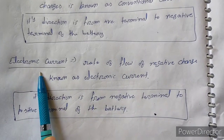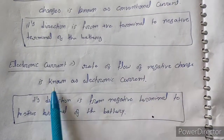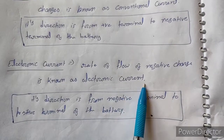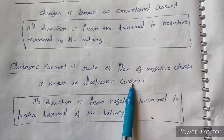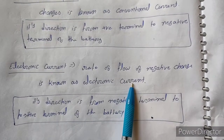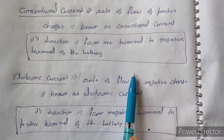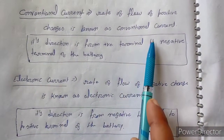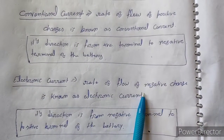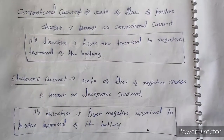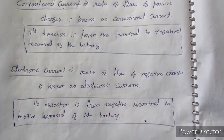The rate of flow of negative charge is known as electronic current. Remember, if you are asked to define just electric current, you need not mention any polarity of the charge — you need not write positive and you need not write negative. For simple electric current, you just write rate of flow of charge.